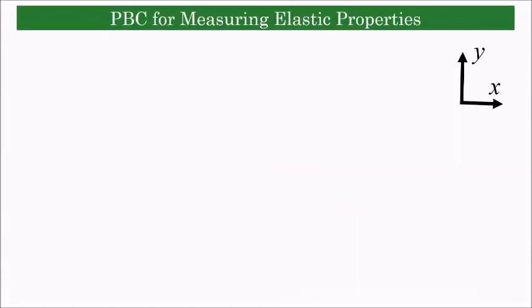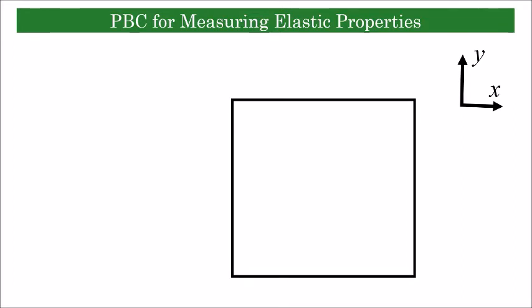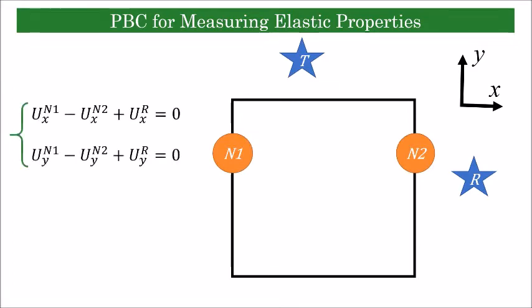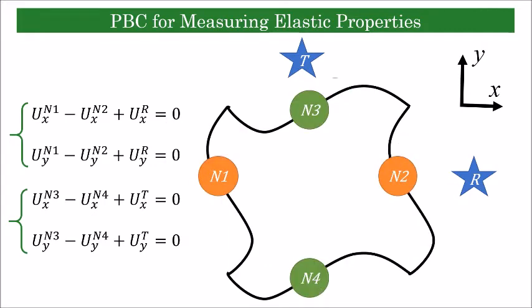For measuring elastic properties, periodic boundary condition or PBC is applied to the RVE using Python programming. For this purpose, two dummy nodes are defined on the top and right side of the RVE. Next, the nodes on the left and right side of the RVE are connected to the right dummy node through this set of constraint equations. Similarly, the nodes on the top and bottom side of the RVE are connected to the top dummy node. As a result of these constraints, once any displacement is applied to the dummy nodes, the RVE will deform periodically.